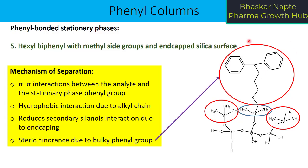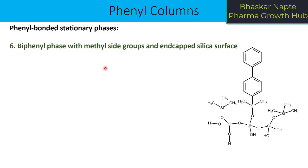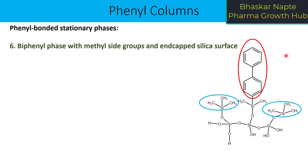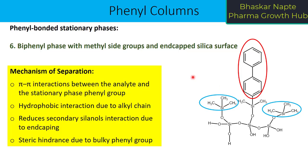The possible mechanisms for the hexyl biphenyl phase are: pi-pi interaction because of the biphenyl, hydrophobic interaction because of the hexyl alkyl chain, reduced secondary silanol effect due to column end-capping, and steric interaction because the biphenyl becomes a much bulkier group. The sixth example is biphenyl phase with methyl side groups and end-capped silica surface — biphenyl functional groups connecting to silicon, with end-capping providing reduced secondary silanol effect in addition to pi-pi interaction, hydrophobic interaction, and steric hindrance from the bulky biphenyl group.